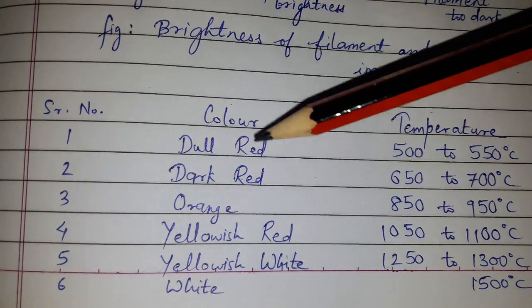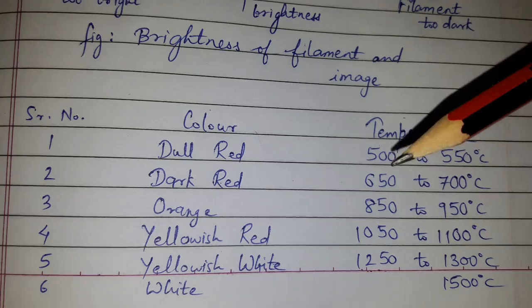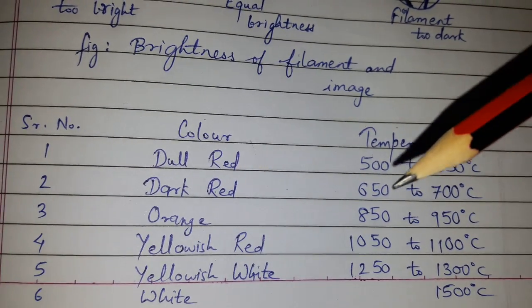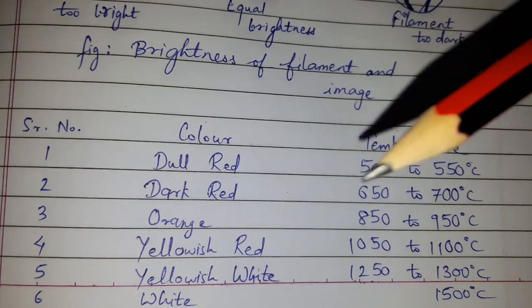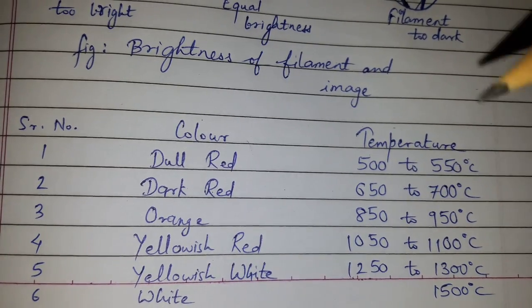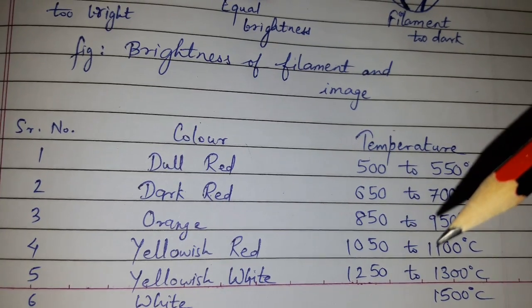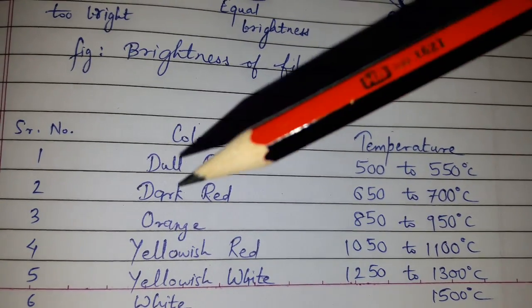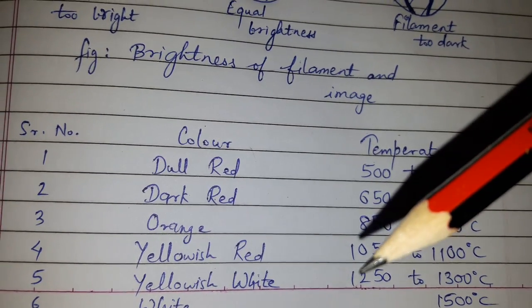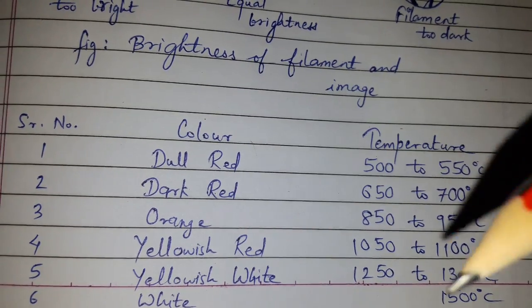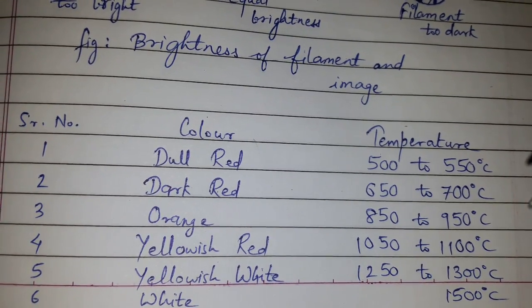Dull red: the temperature is 500 to 550. Dark red: 650 to 700. Orange: 850 to 950 degrees C. Yellowish red: 1050 to 1100 degrees C. Yellowish white: 1250 to 1300. White: 1500 degrees C. So this is how we can obtain or know the temperature of the body.